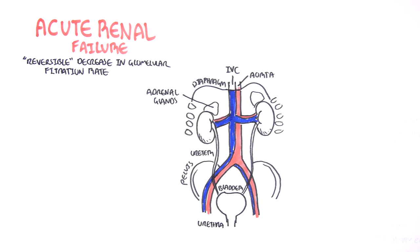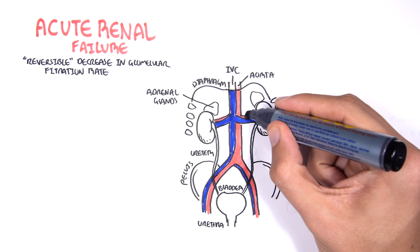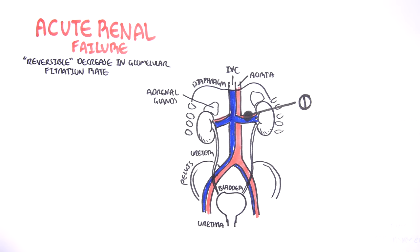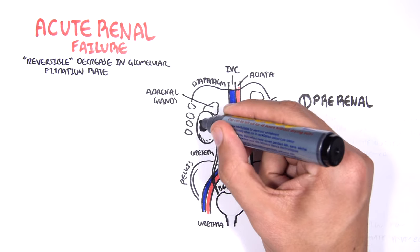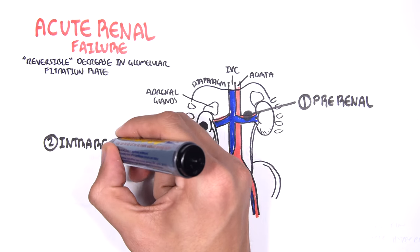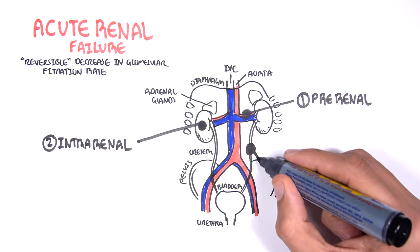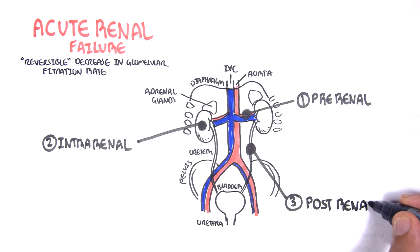Now I want to talk about the main causes of acute renal failure. And there's three main ones. It can either be pre-renal, before the kidneys, intra-renal, within the kidneys, or post-renal, after the kidneys. So, these are the main causes.